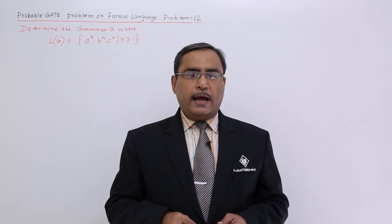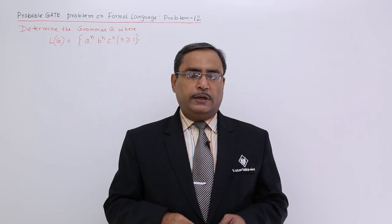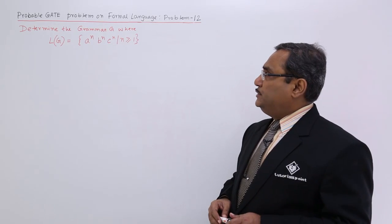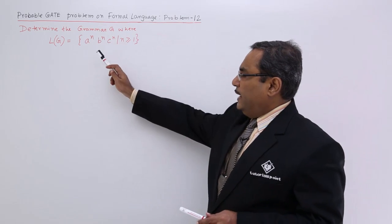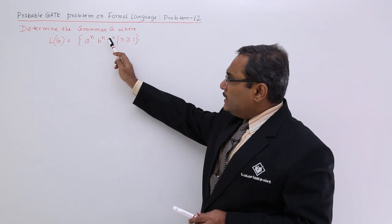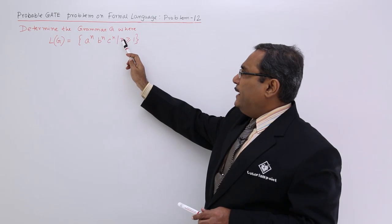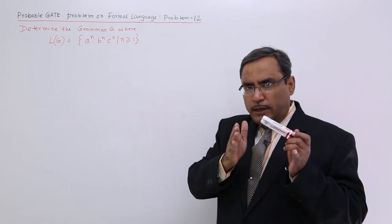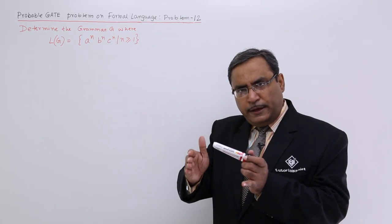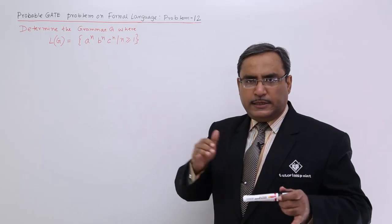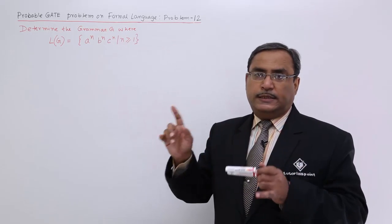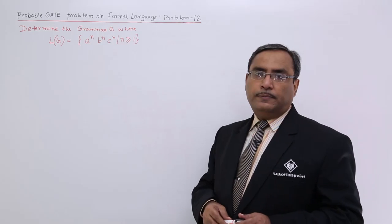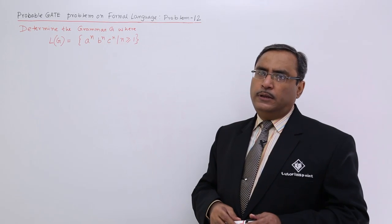Let us discuss another very typical and common problem in formal language. The problem is: determine the grammar G where L(G) = {a^N b^N c^N | N ≥ 1}. That means all A's come together, then all B's, then all C's — no mixture of A, B, C — but A, B, and C all have the same number of occurrences. So, how to solve this one? Let us go for the solution.